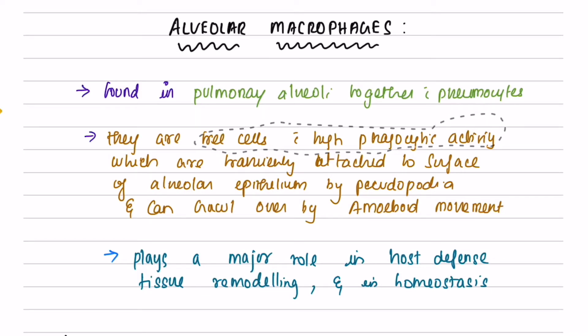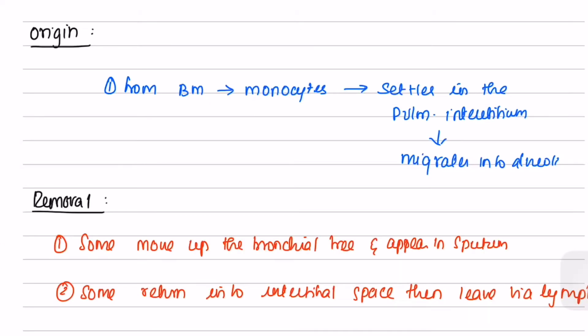They are transiently attached to the surface of the alveolar epithelium by pseudopodia and they can crawl over by amoeboid movement. They play a major role in host defense mechanism, tissue remodeling, and in homeostasis.